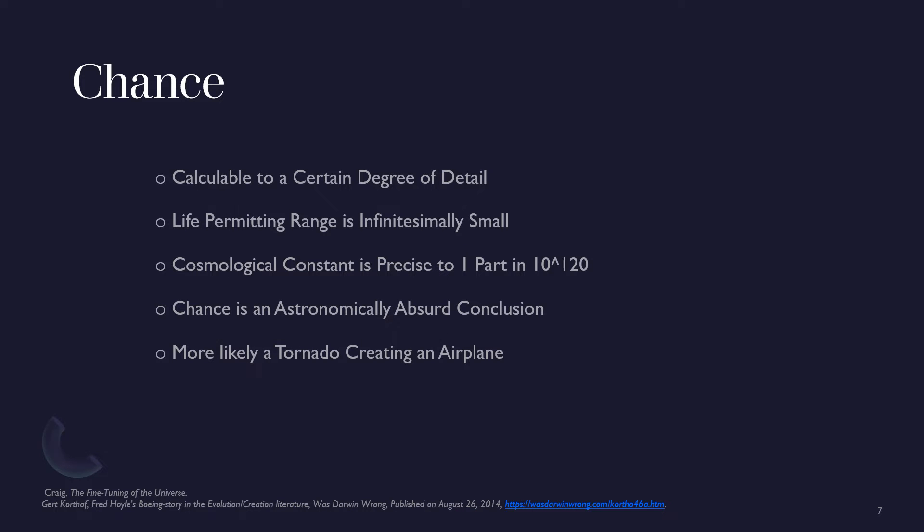Others have decided that instead of necessity, it would make more sense if it happened all by chance. Chance is an interesting idea because it is calculable to a certain degree, especially considering natural forces and alternative outcomes to reality. For instance, the life permitting range is so minutely calculated that one infinitesimally small change can make it possible for life to not exist at all. Taking into perspective just the cosmological constant, which if changed in one part in 10 to the 120th power, the universe would expand either too rapidly or too slowly.